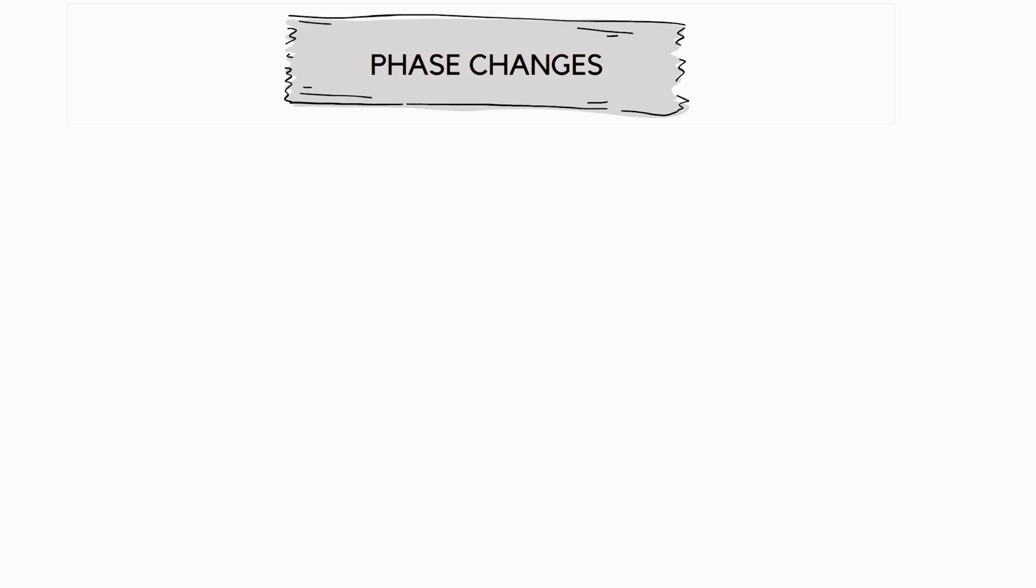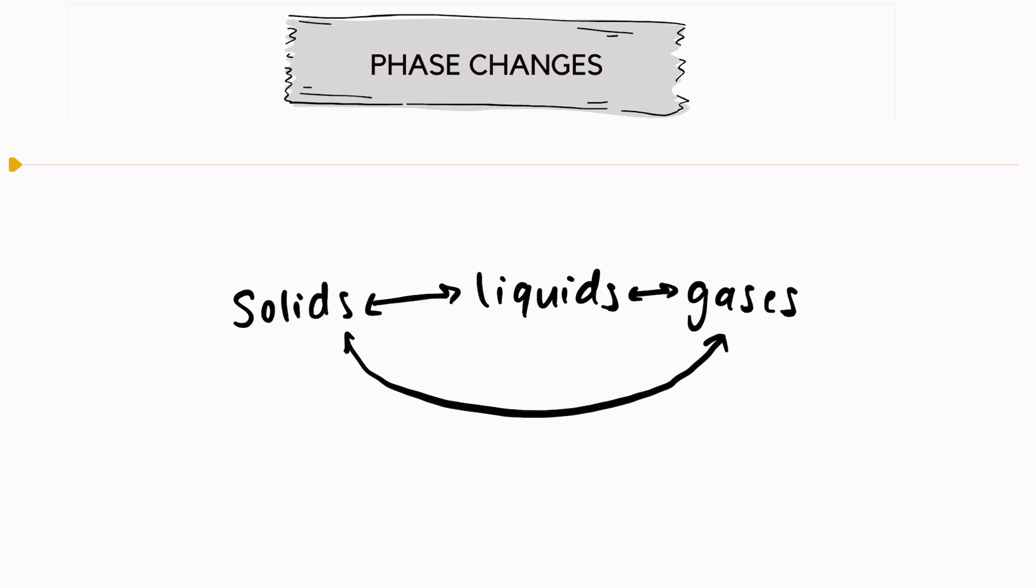So we're going to look at the three states of matter: solids, liquids, and gases. And we know that all three of these phases are interchangeable. We can go in between all three of them.